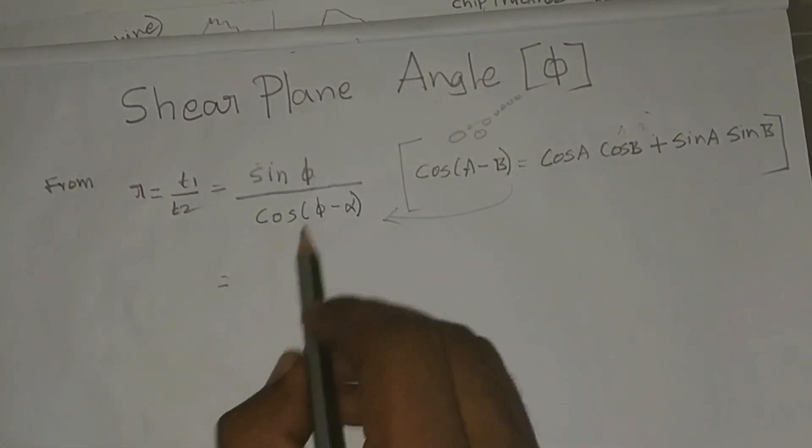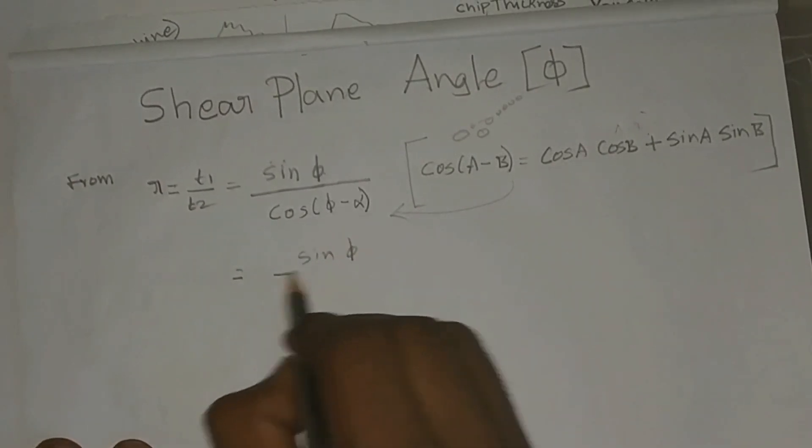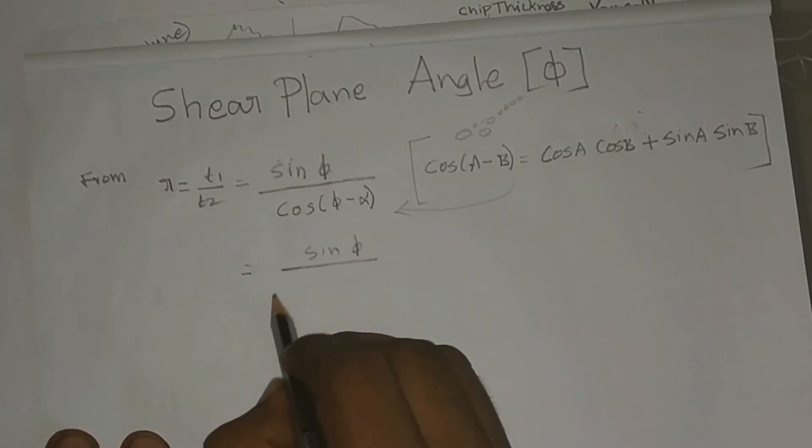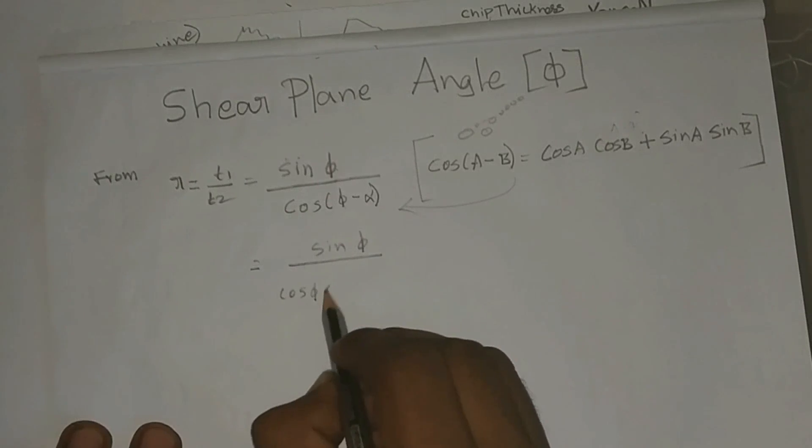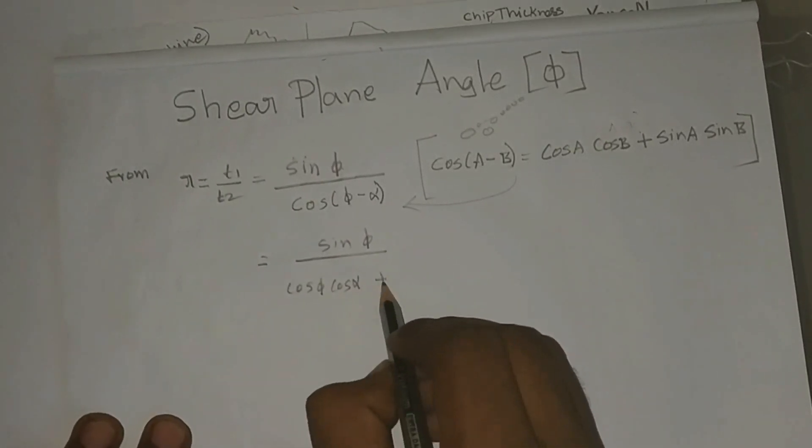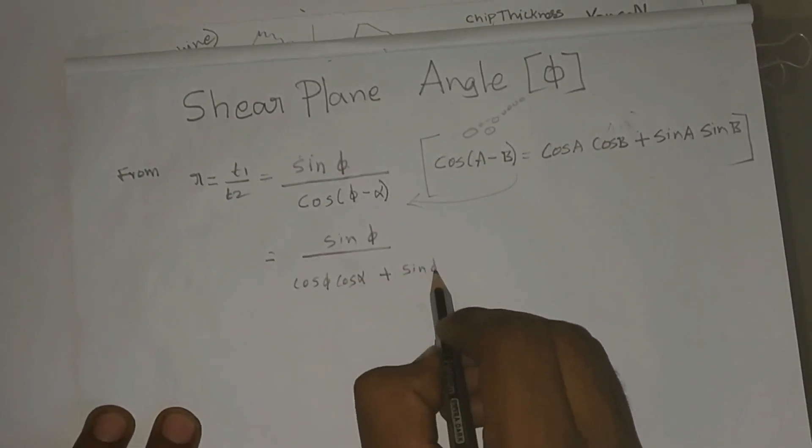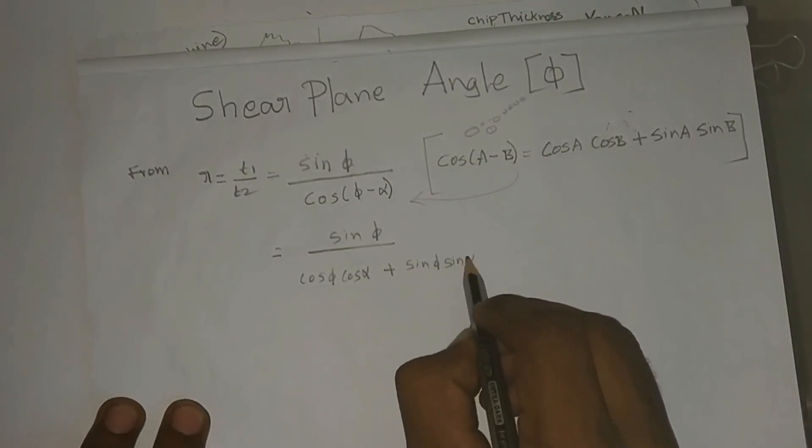So this becomes: sin φ divided by cos φ cos α plus sin φ sin α.